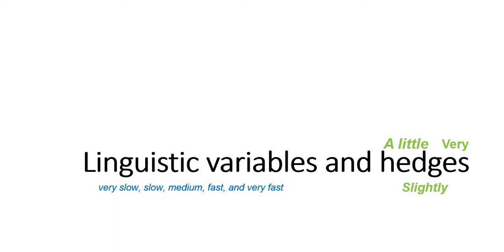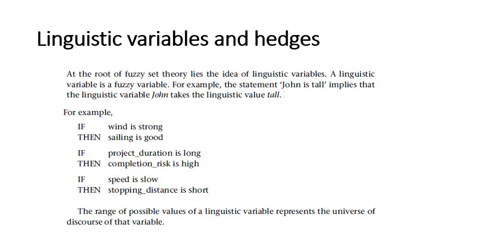Linguistic variables and hedges are something like very slow, medium, fast and very fast. Hedges are something like a little, very, and slightly. Linguistic variables represent statements. For example, we have the statement John is tall. If wind is strong, then sailing is good. If project duration is long, then competition risk is high. If speed is low, then stopping distance is short.